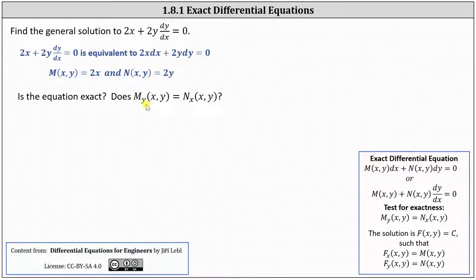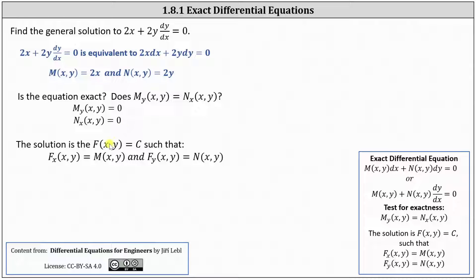The partial of M with respect to y is the derivative of 2x with respect to y treating x as a constant, which is zero. The partial of N with respect to x is the derivative of 2y with respect to x, which is also zero. Because the partials are equal we have an exact differential equation, so we need to find F(x,y) = c such that the partial of F with respect to x equals M and the partial of F with respect to y equals N.